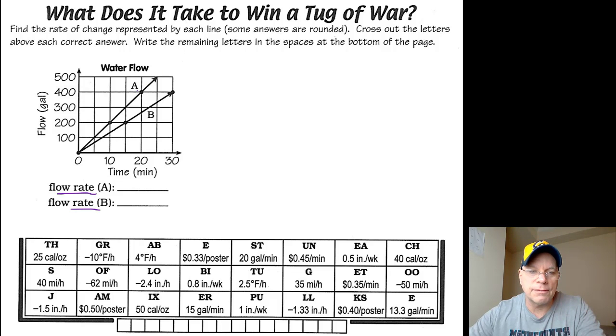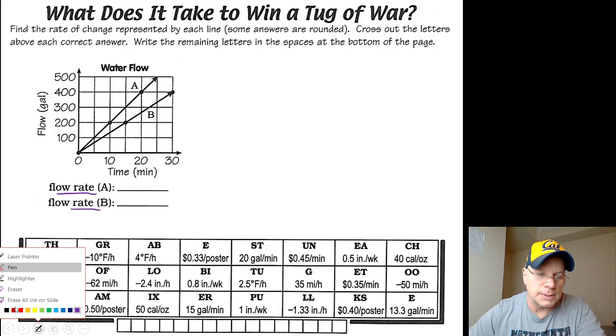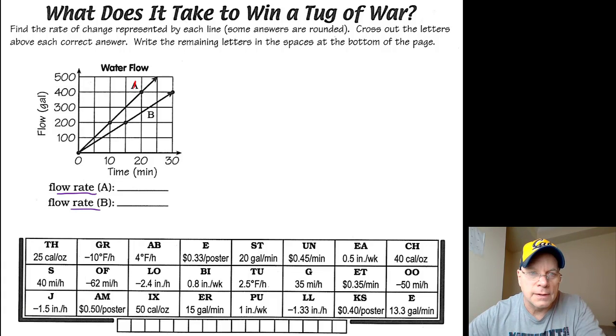To calculate the flow rate for garden hose A, choose two points on that line. Well, two points have been chosen for us already. Let me do a little color coding here. I'll do A in red. So they've already indicated these two points. They didn't need to do that for us. We could have done that for ourselves, and you'll see in the upcoming problems, you'll need to choose the two points. That's part of the challenge of these problems, but in any case, for A, I'm going to do my change in Y over my change in X.